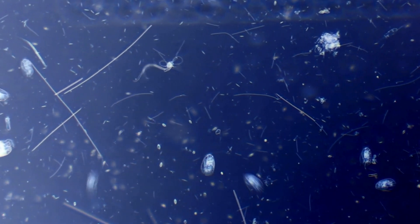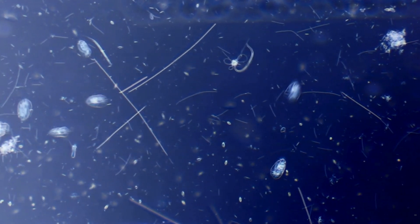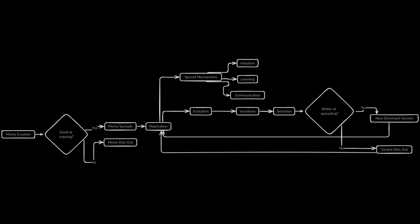So how do memes spread and evolve? The process is surprisingly similar to biological evolution. Memes that are good at getting copied and passed on tend to survive and spread, while those that aren't tend to die out. This can happen through various mechanisms, such as imitation, learning, and communication.